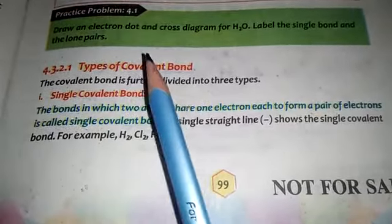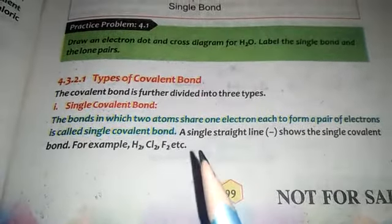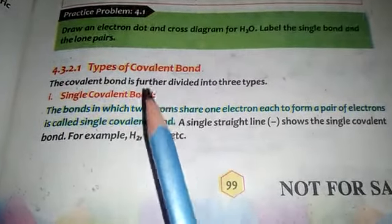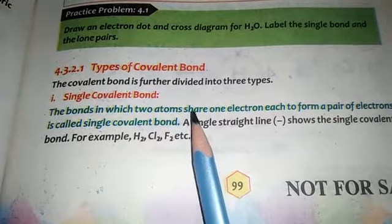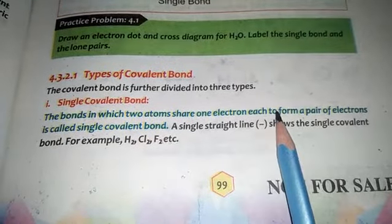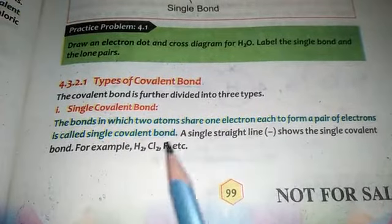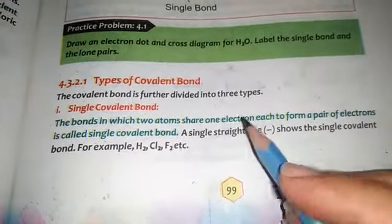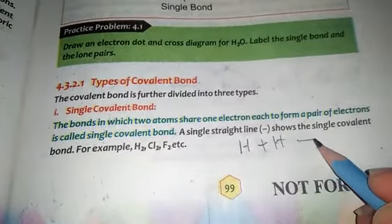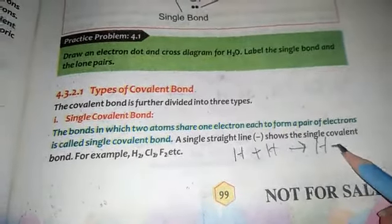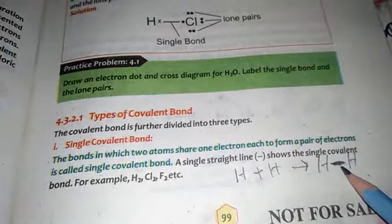The covalent bond is further divided into three types: the single covalent bond, the double covalent bond, and the triple covalent bond. The first is the single covalent bond. The bond in which two atoms share one electron each to form a pair of electrons is called a single covalent bond. A single straight line represents the single covalent bond. For example, H2 — hydrogen atom plus hydrogen atom combine together, and this dash line shows that this is a single covalent bond formed between the two hydrogen atoms.